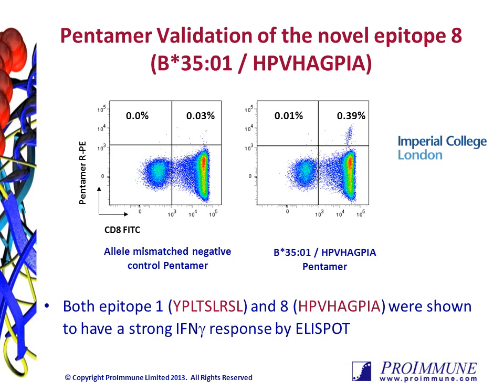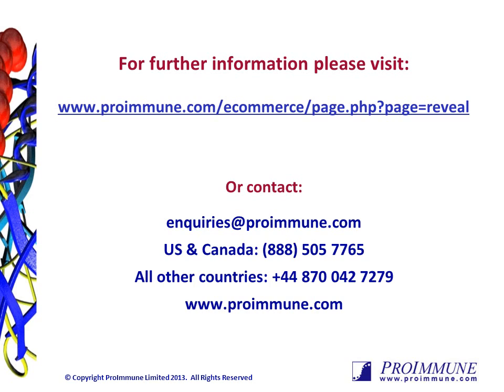Compared to the more classical strategies of functional T cell assays, such as ELISPOT or proliferation assays, Proimmune's Reveal and Prove not only means a vast saving in precious cellular material, but it also takes just 4-6 weeks to complete, including full peptide synthesis. More details of our Proimmune Reveal and Prove system, including publications and case studies, can be found on our website. Please feel free to contact us if you would like a sample report, a quotation, or if you have any further questions. Thank you very much for listening.